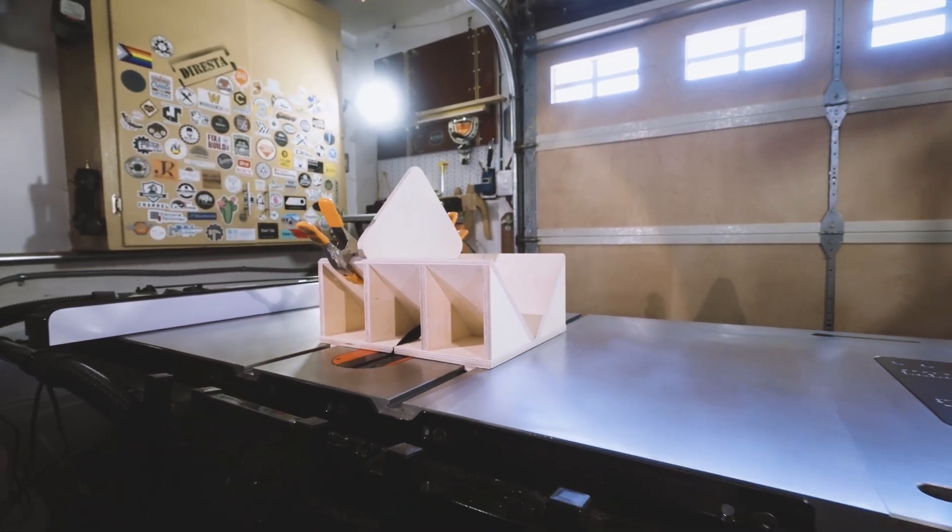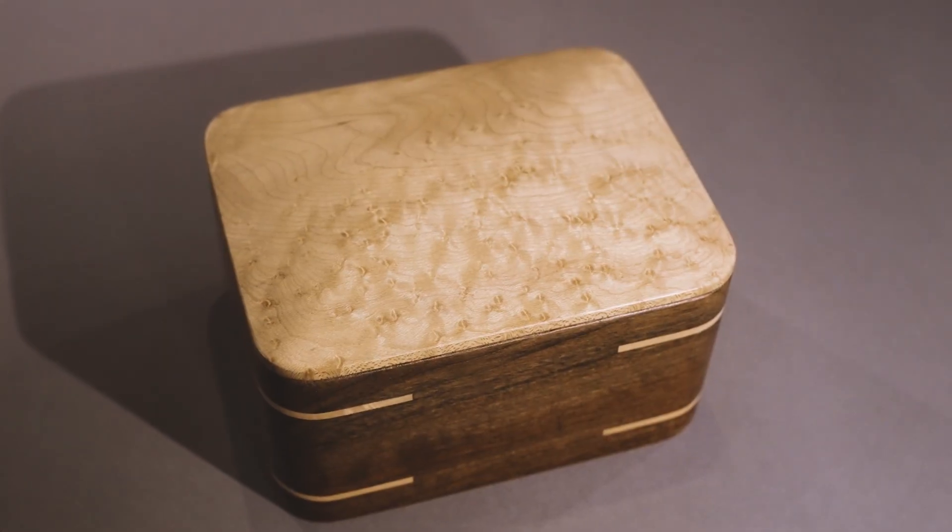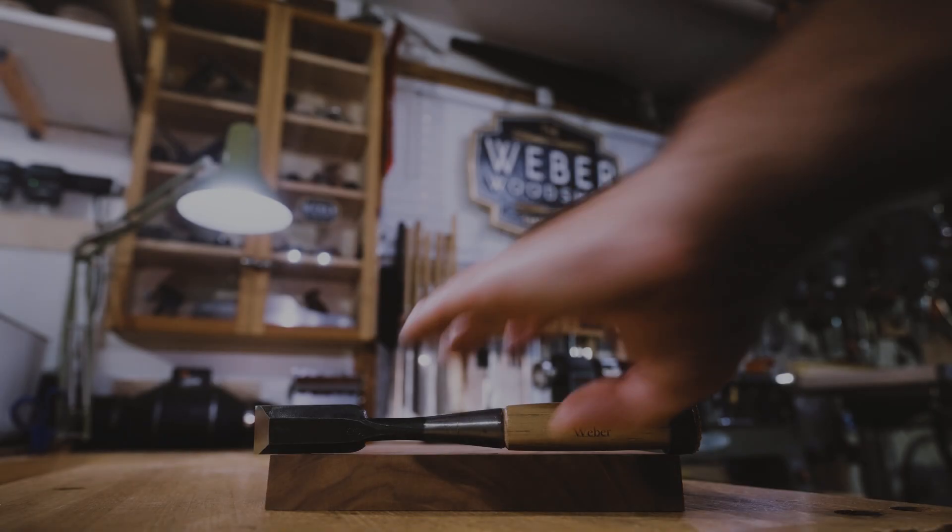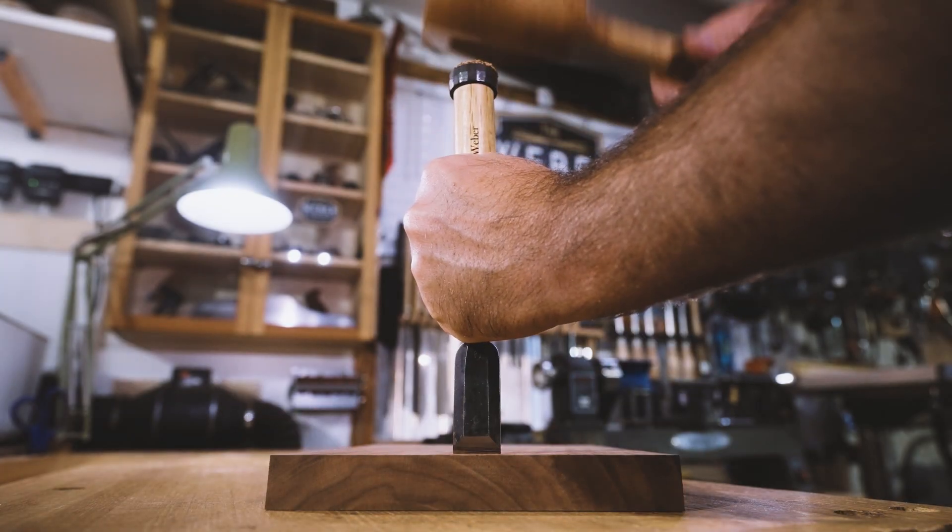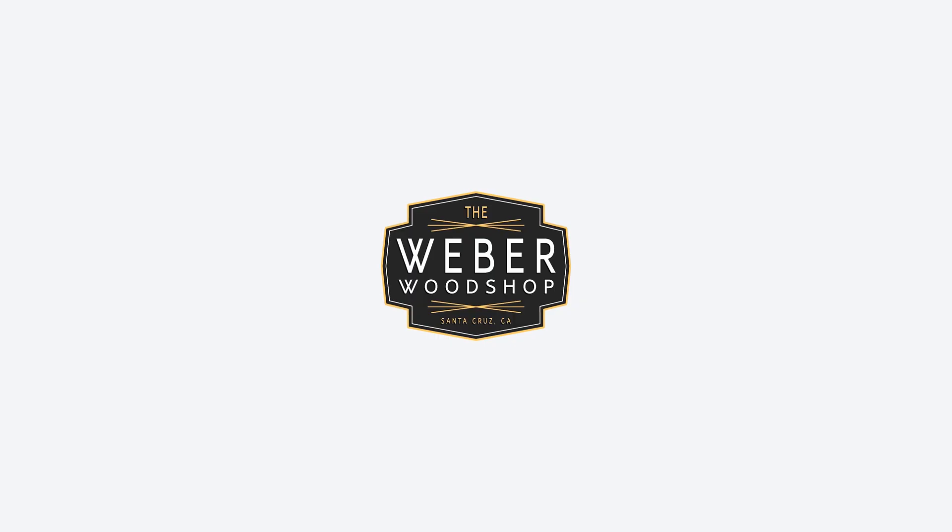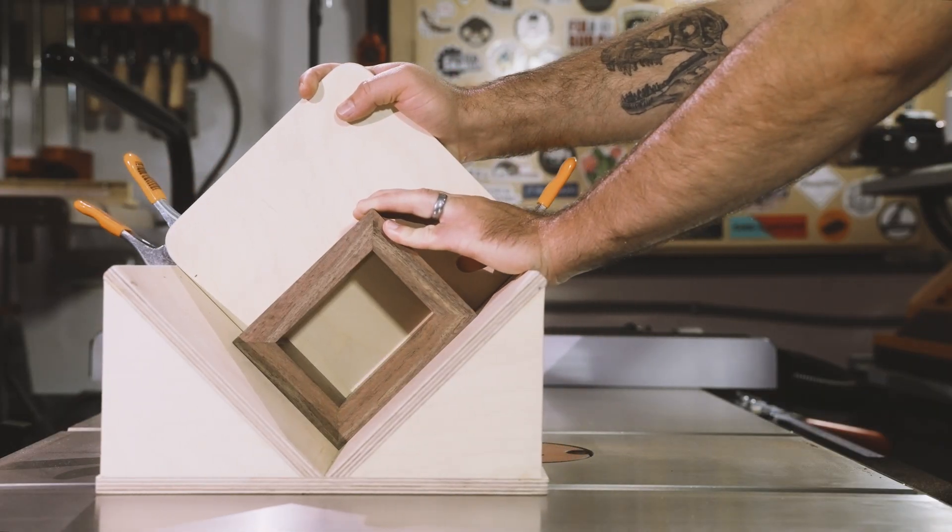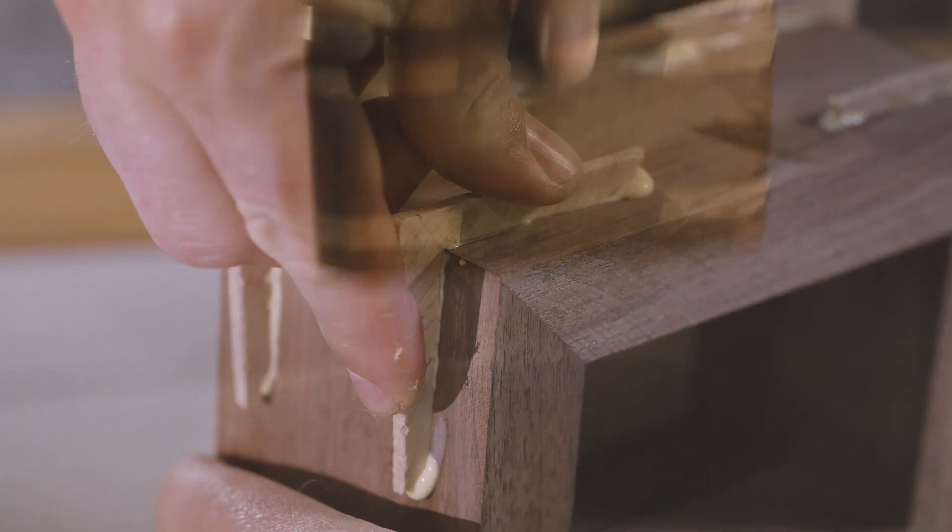In the next video, we'll use this jig to make a simple mitered box. In the previous video, we built this miter key jig on the saw stop. And today we're going to use it to build a simple mitered box.